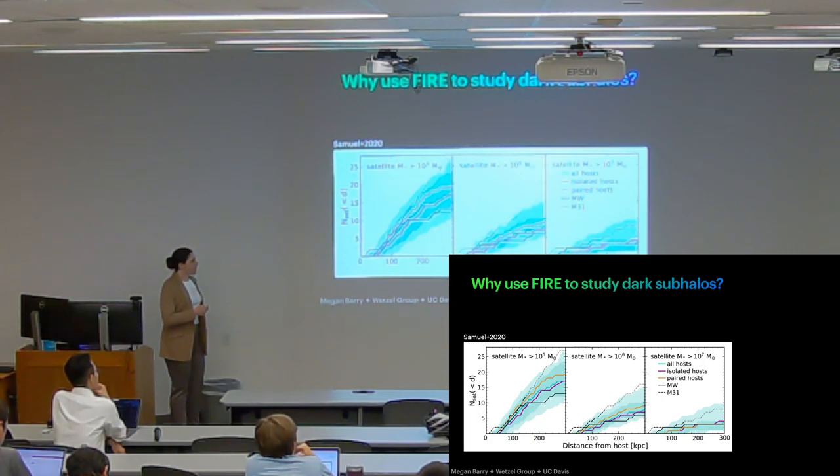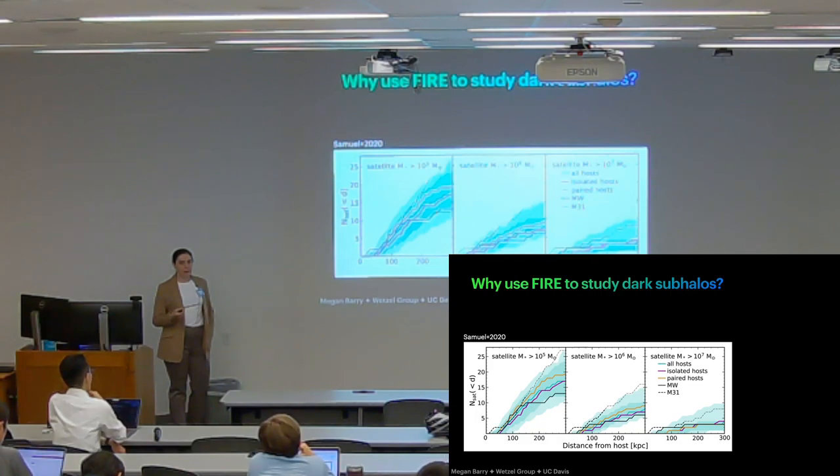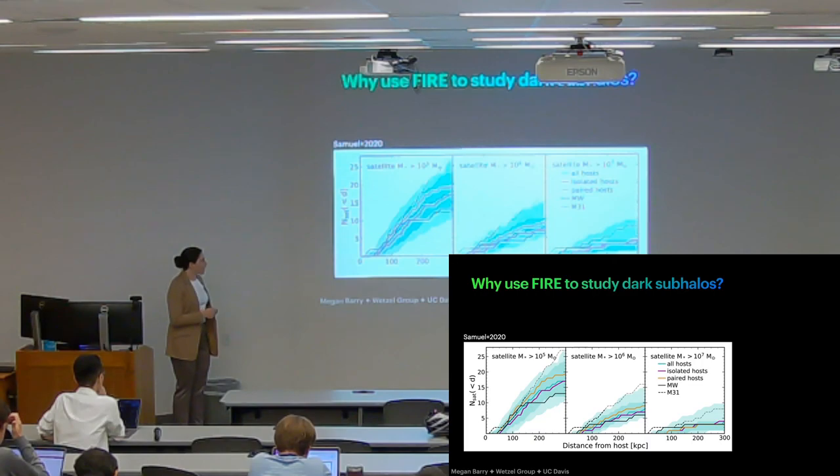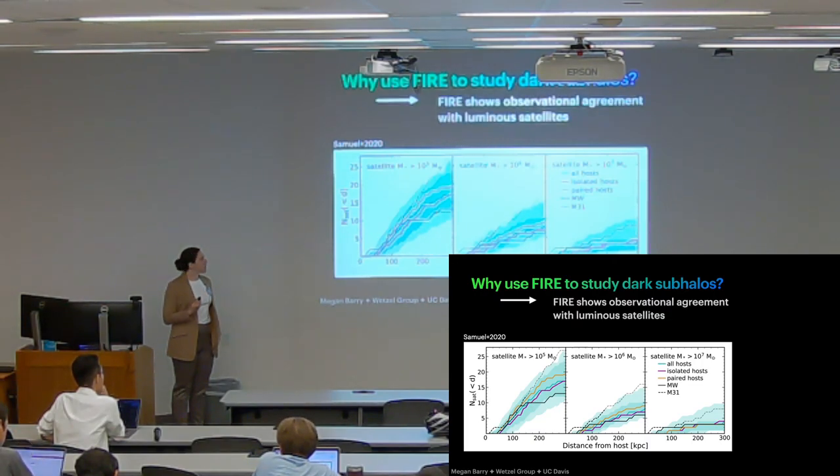This shows the total number of satellite galaxies above these stellar masses at these distance ranges. And the black and dotted black and solid black and dashed black lines show the milky way and observational results for the milky way and M31. So you can see that this is the average of all 13 milky way mass simulations, and they're basically right between Andromeda and the Milky Way at all three of these mass ranges. So if fire can show good observational agreement with luminous satellites, we can at least hope that it would show good predictions for dark satellites.